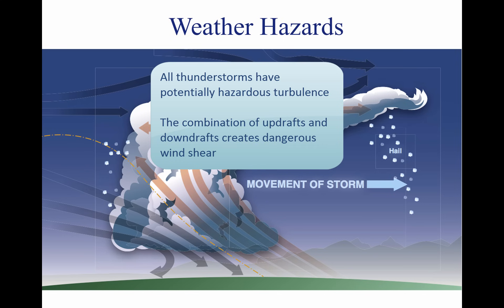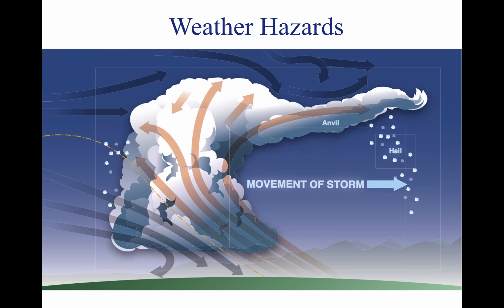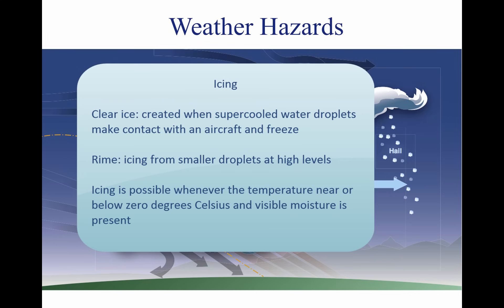Strongest turbulence within the cloud occurs with shear between updrafts and downdrafts. Outside the cloud, shear turbulence has been encountered several thousand feet above and 20 miles laterally from a severe storm. Updrafts in a thunderstorm support abundant liquid water with relatively large droplet sizes. When carried above the freezing level, the water becomes supercooled. Supercooled water freezes on impact with an aircraft. Clear icing can occur at any altitude above the freezing level, but at high levels, icing from smaller droplets may be rime or mixed rime and clear ice.